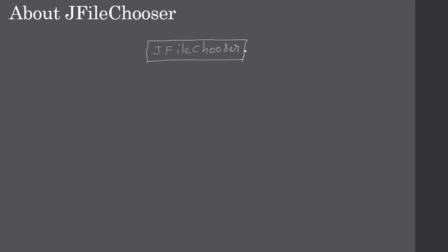JFileChooser is the class from the javax.swing package. There are two constructors: one is the empty constructor, and the other lets you specify an initial directory path. For example, if you specify 'Java', when the dialog is displayed it will show that initial path.